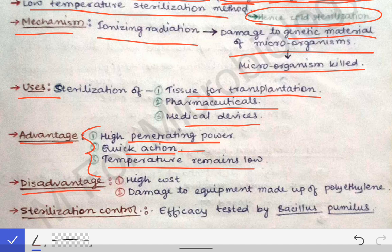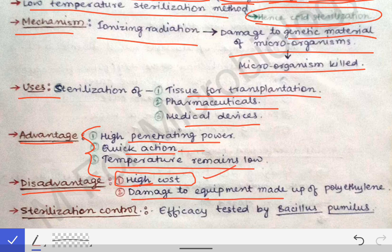The disadvantage is that it has a very high cost, which is understandable because using rays like gamma rays and alpha rays requires more expenditure. Another disadvantage is damage to equipment made up of polyethylene.